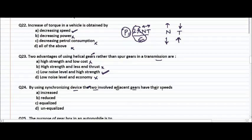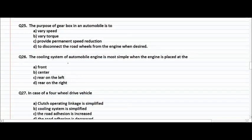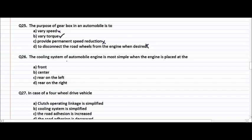Synchronizing devices make the two gears involved have equal speed — their speeds are equalized. That is why it is called a synchronizing device. The purpose of a gearbox in an automobile is to vary speed, vary torque, provide permanent speed reduction, or disconnect road wheels from the engine when desired? The right answer is varying the torque.